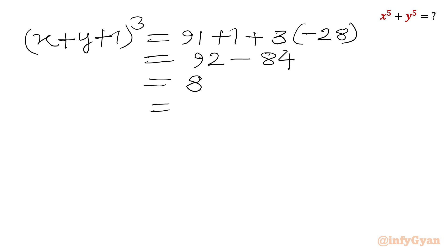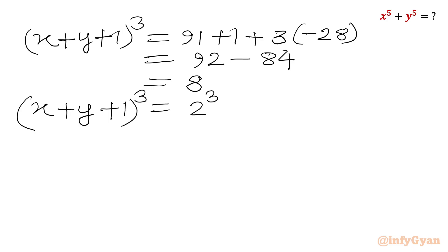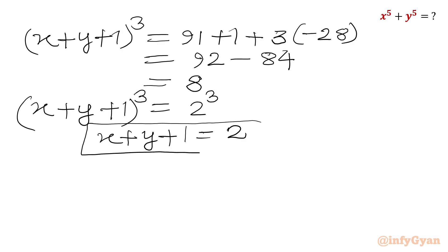We have 8, which is 2³. So (x + y + 1)³ = 2³. Taking the cube root of both sides gives x + y + 1 = 2 for real x, y. Subtracting 1 from both sides, we get x + y = 1.